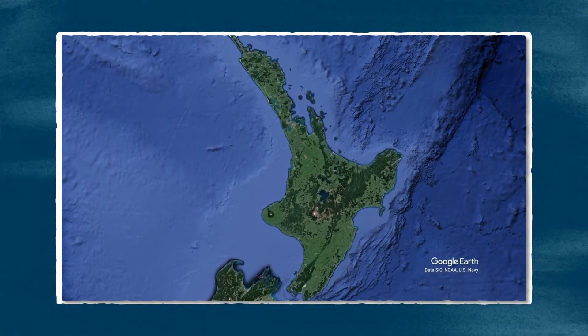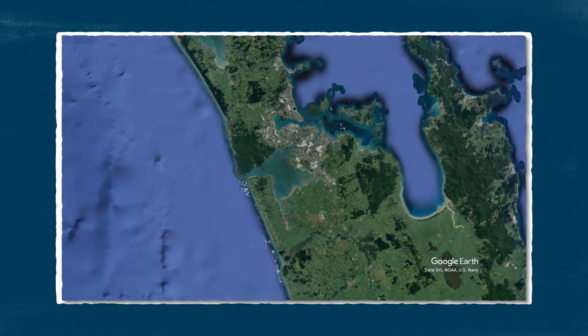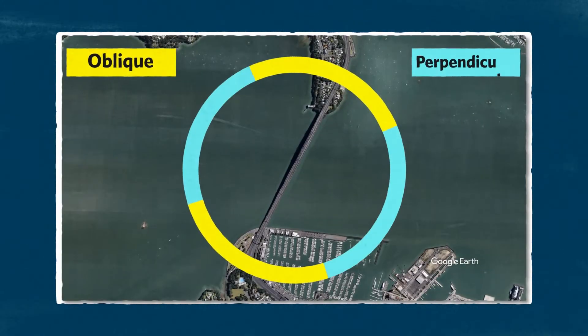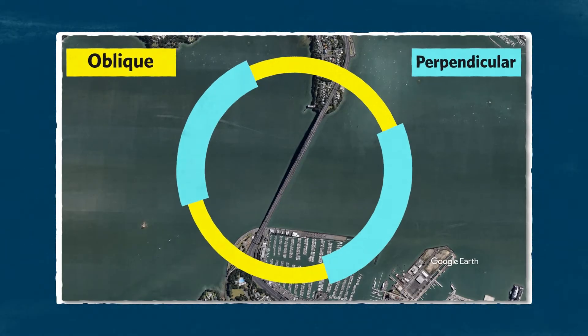Wind travels across Auckland Harbour Bridge from either an oblique or perpendicular angle. While wind speed can make either direction dangerous, it is the perpendicular winds that are of high risk to vehicles and the bridge structure.